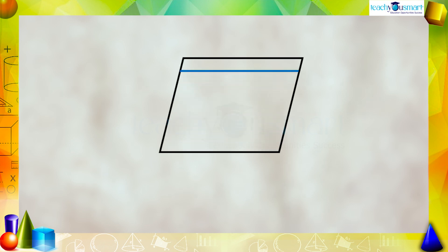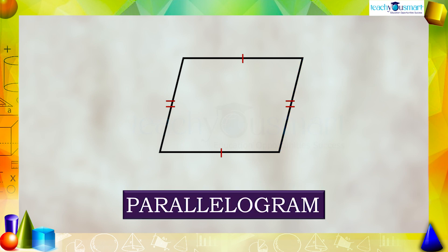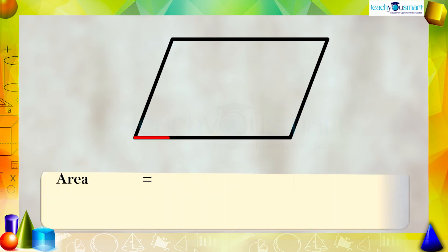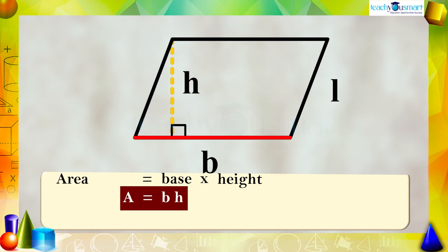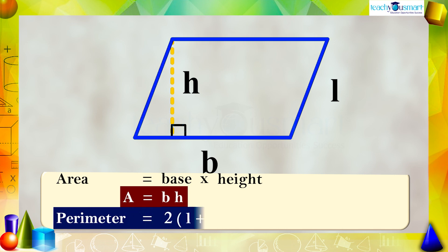We know that the quadrilateral with opposite sides equal and parallel is called a parallelogram. If we take the base as b and the perpendicular height to the base as h, then the area is base multiplied by height, that is A = bh. Since the opposite sides of a parallelogram are equal, its perimeter will be 2 multiplied by (l + b).